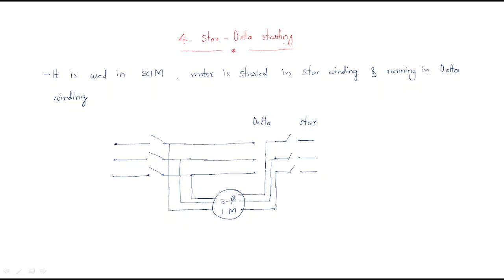In this session we will discuss the continuation part of the starting methods of three-phase induction motor. We already discussed four starters: DOL starter, resistance starting method, reactance starting method, and the fourth one is the star-delta starter.